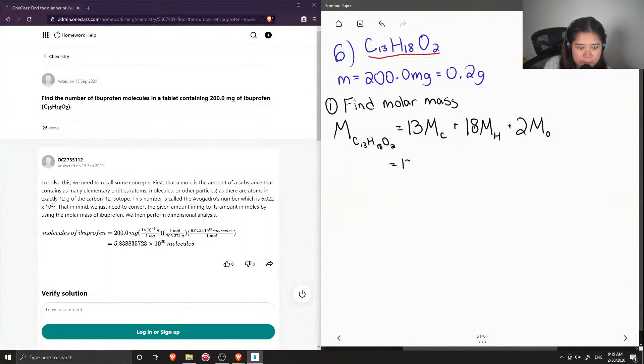Okay, so on the periodic table, you'll find that for carbon, it has an atomic mass of 12.01 grams per mole. For hydrogen, it is 1.01 grams per mole. And for oxygen, it is around 16 grams per mole. Okay, so if we multiply it all out, we should end up getting a molar mass of 206.31 grams per mole.